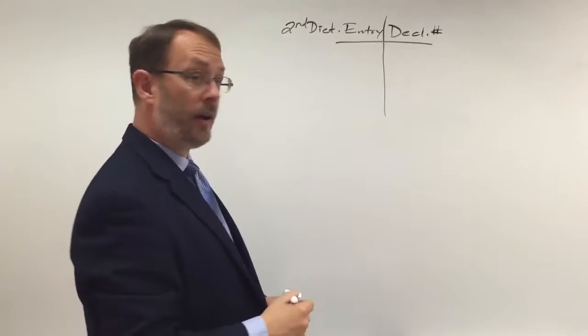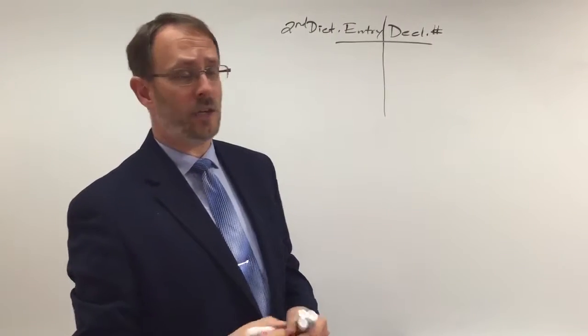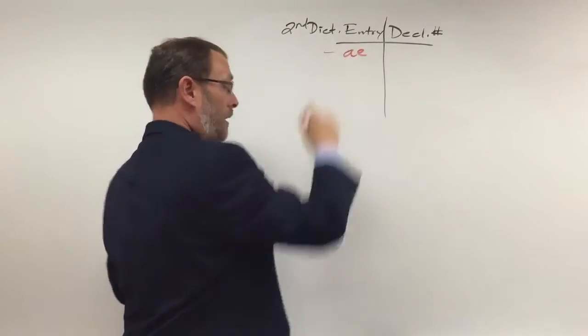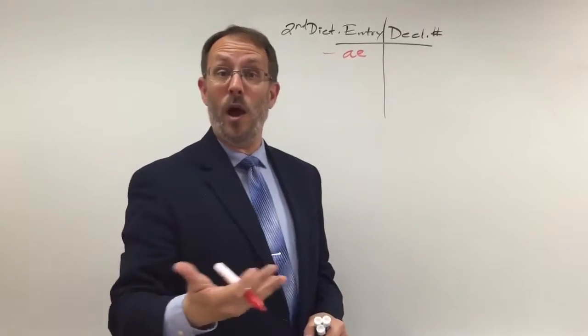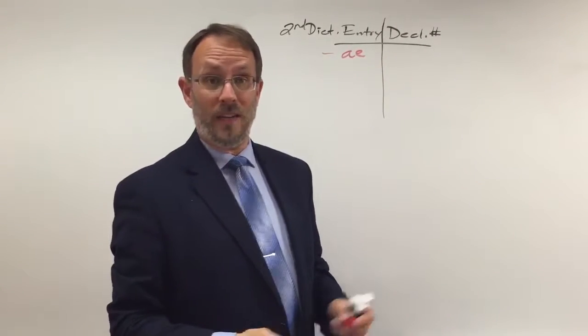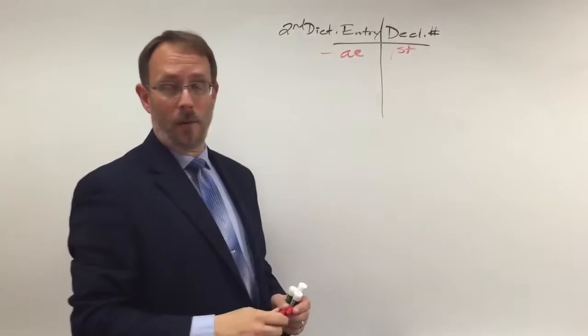You look at the second dictionary entry, which you notice we've done that with verbs too. We spent a lot of time looking at second dictionary entries. If the second entry ends with an A-E, words like Puella, Puellae, Girl, Silva, Silvae, Forest, or Insula, Insulae, Island, that indicates a first declension noun.